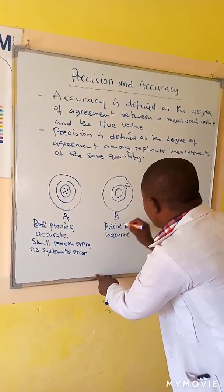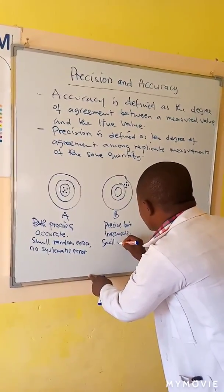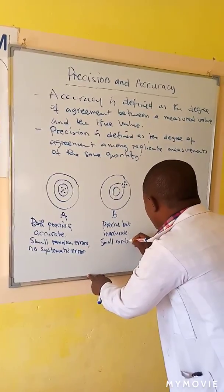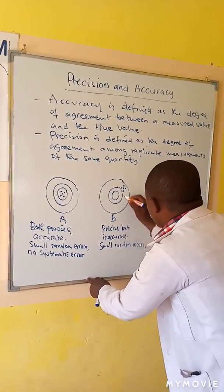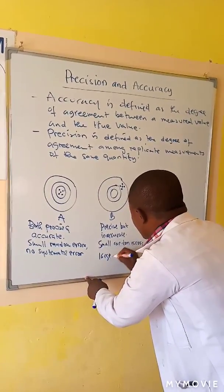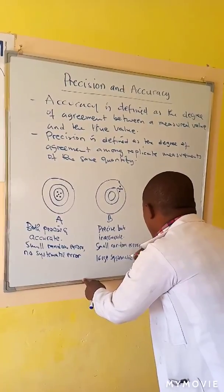This simply means there are small random errors and large systematic errors.